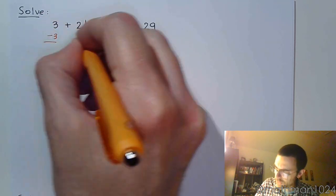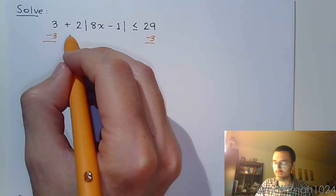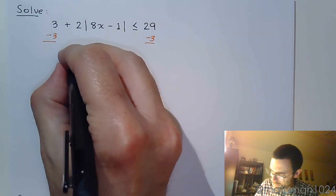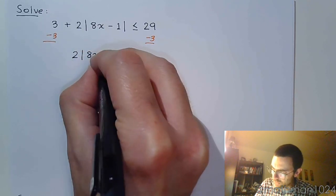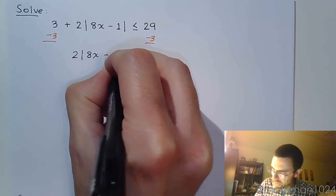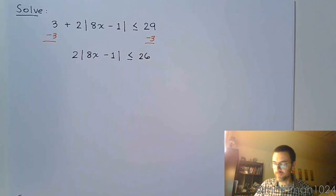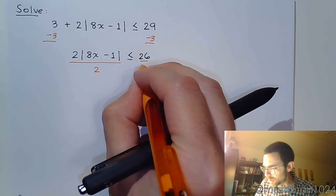let's subtract the 3. Again, if you try to add 3 and 2 first, I just don't even know what to do. Pay attention, slow down, be careful. So we have 2 times the absolute value of 8x minus 1 is less than or equal to 26. We almost have the absolute value by itself, so we don't stop until we do have it by itself. We're going to divide both sides by 2.